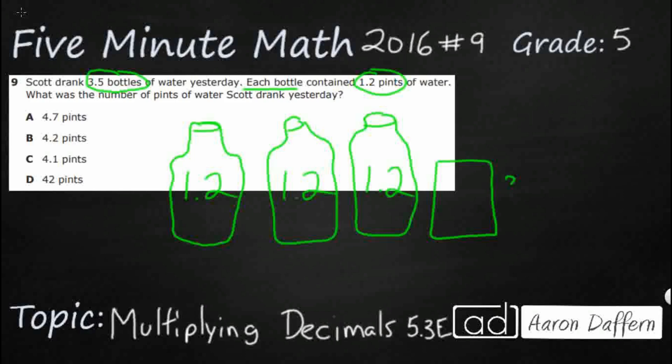So we could do a little bit of addition if we wanted to. So we could do 1.2, 1.2, 1.2. We can add that up. That's going to be 3.6 plus half of 1.2. So we're going to have to figure out what half of 1.2 is.